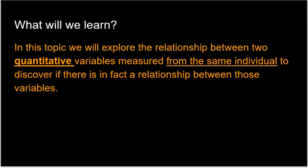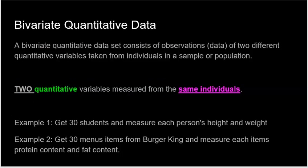So it's important that you understand is that we're going to create data points, and each point represents an individual, and we're going to measure two data points on that individual, a quantitative variable and a second quantitative variable, and the goal is to see if there's any kind of relationship between those two variables. So this is known as bivariate quantitative data. Prefix bi means two, right? So a bivariate quantitative data set consists of observations, data of two different quantitative variables taken from individuals in a sample or a population.